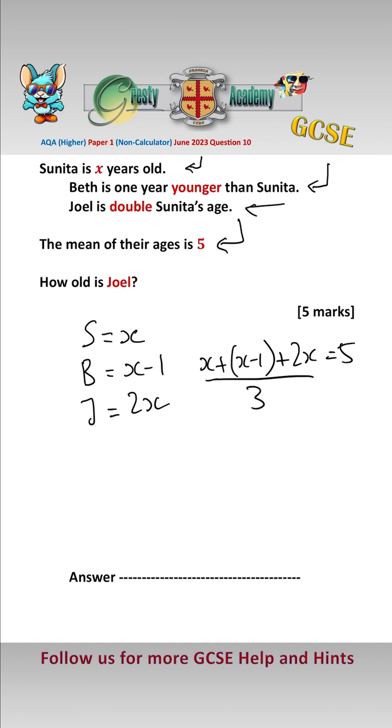Simplifying the top, we get x add x add 2x. 4x minus 1 over 3 equals 5, i.e. 4x minus 1 equals 15. So 4x equals 16, i.e. x equals 4.